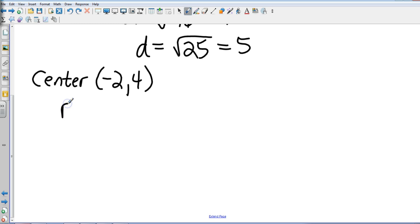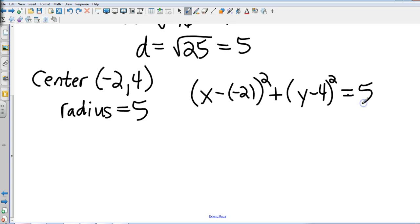And I have a radius of 5. So plugging that into my formula, that's going to be x minus negative 2 plus y minus 4, both of those squared, and then equals the radius squared. So that's going to end up being x plus 2 squared plus y minus 4 squared equals 25.